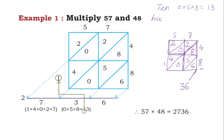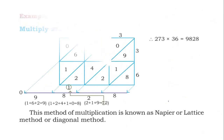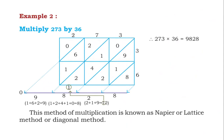For the hundreds digit, add all these: 1 plus 4 plus 0 plus 2 equals 7 — put 7 here. For the thousands digit, only 2 is there. So the answer is 2736.